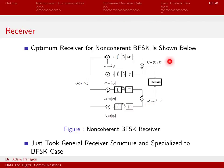We know how to do the optimal decision: if R0 squared is bigger than R1 squared, we declare S0(t); if R1 squared is bigger, we declare S1(t). We've taken the general non-coherent receiver and specialized it for BFSK.